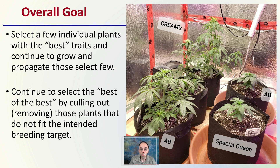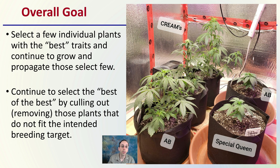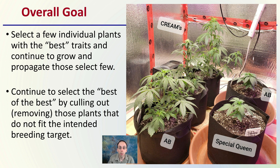The overall goal of phenohunting is to select a few individual plants with the "best" traits and continue to grow and propagate that select few. "Best" relates to what the grower deems desirable. You want to continue selecting the best of the best by culling or removing plants that do not fit the intended breeding target, which may vary based on different growers.